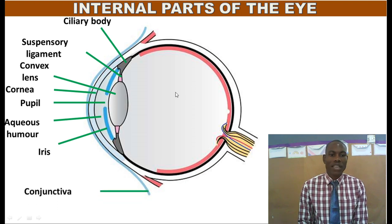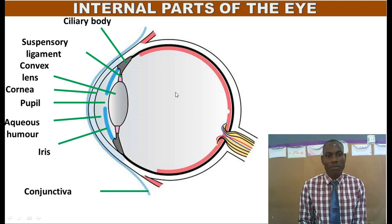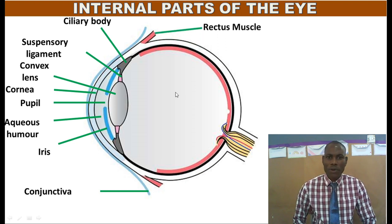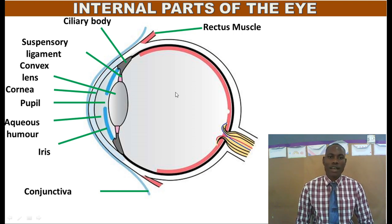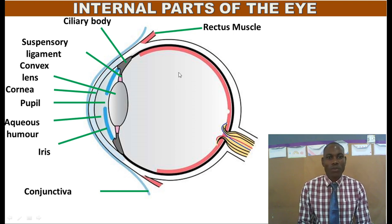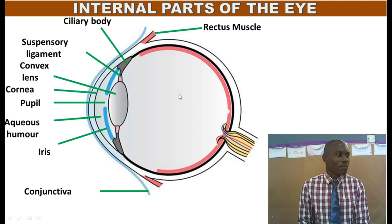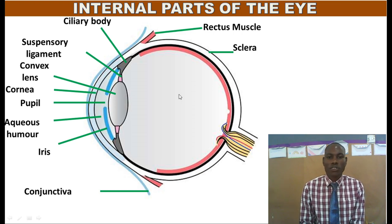We also talked about the conjunctiva, and we said that it is a thin membrane that covers the front part of the eye. Then we went to the rectus muscle — that is the muscle that enables you to move your eye up and down or sideways. We also have the sclera, a tough part of the eye that protects the inner parts of the eye from damage.